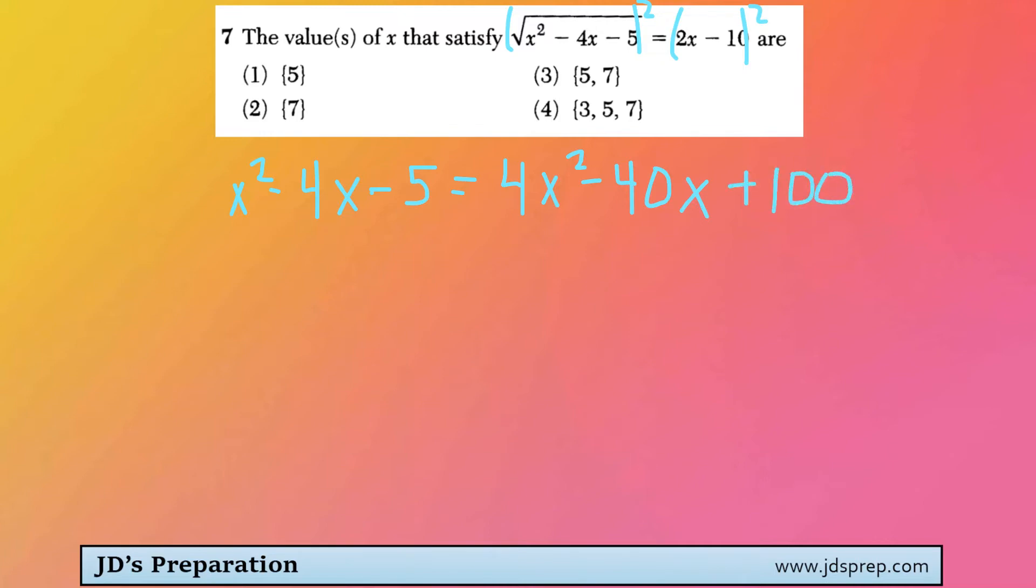Next step would be to move everything over to the same side of the equation. So to do that, I'm going to subtract x squared, add 4x, and add 5 to both sides. So I'll cancel everything over here, and we'll get 0 equals 3x squared minus 36x plus 105.